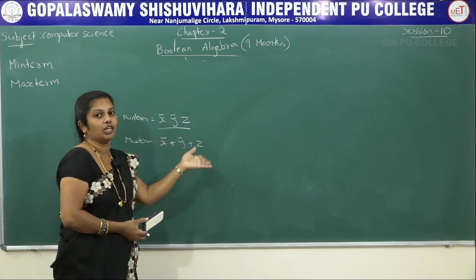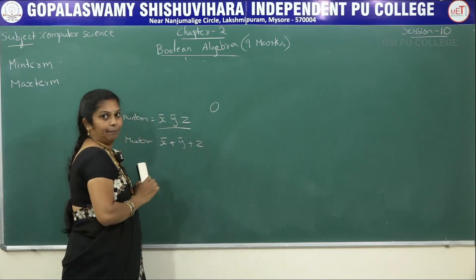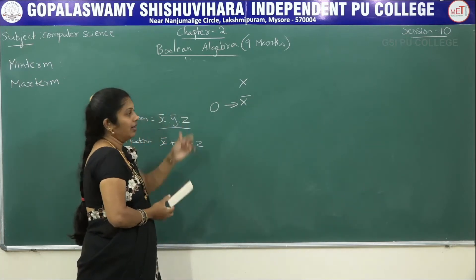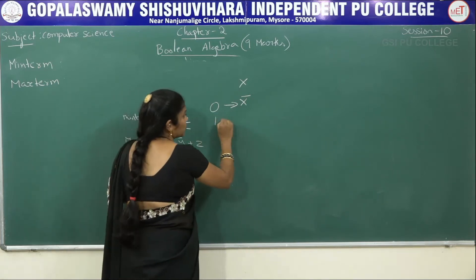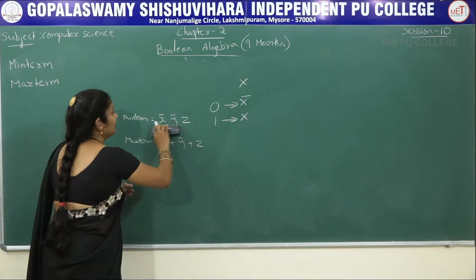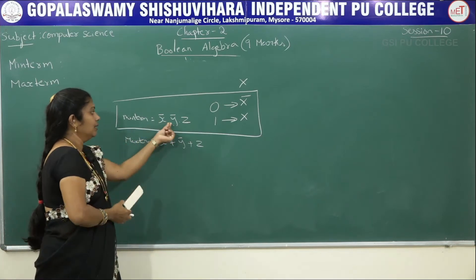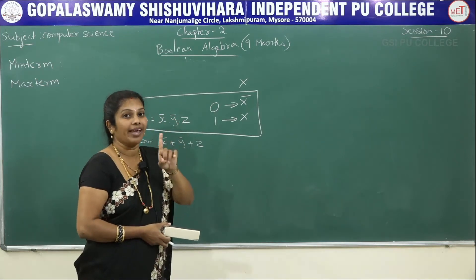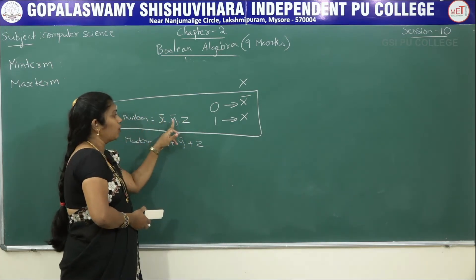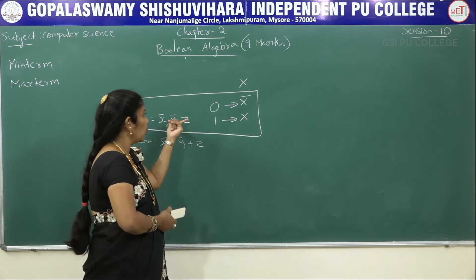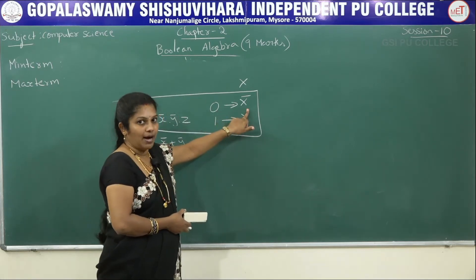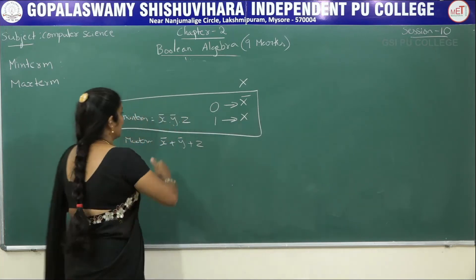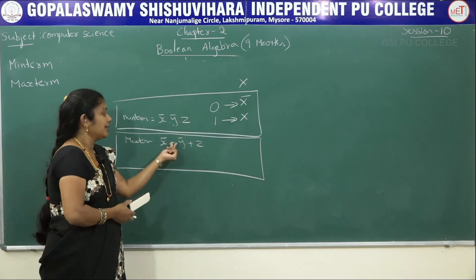In a minterm, if a variable's value is zero, it is represented as a complemented variable — with a bar. If it is one, it does not have any complement. So in minterm: 0 → complement (bar), 1 → no complement. For maxterm, the rule is the reverse: if the value is zero, the variable appears without a complement; if it is one, the variable appears with a complement.